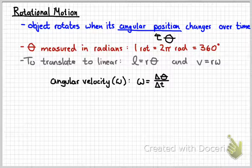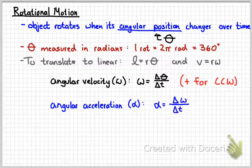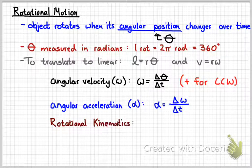Angular velocity, or omega, is defined as the rate of change of angular position over time: omega equals delta theta over delta t. This is positive when motion is counter-clockwise; if the object rotates clockwise, omega is negative. Angular acceleration, alpha, is defined as the rate of change of angular velocity over time, and there are three rotational kinematic equations analogous to the linear ones.